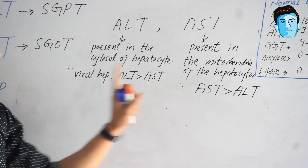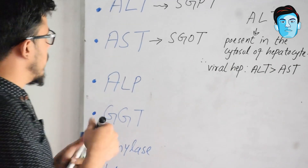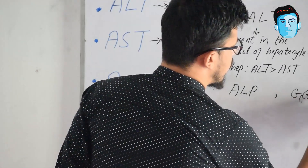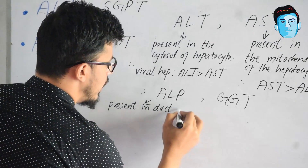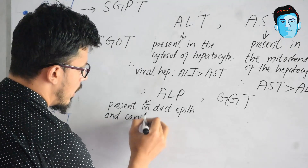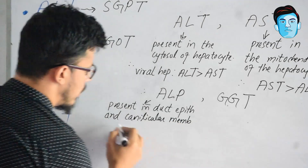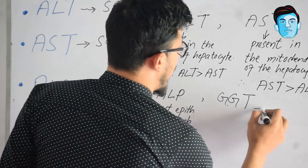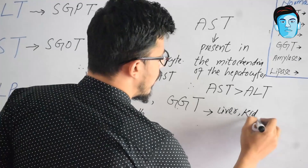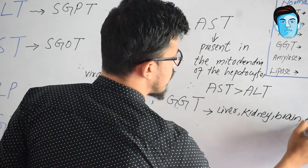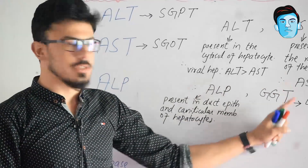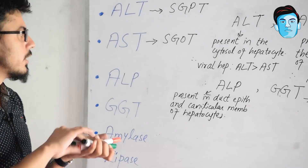Now let's talk about ALP and GGT. ALP — alkaline phosphatase — is present in the duct epithelium and canalicular membrane of hepatocytes. GGT — gamma glutamyl transpeptidase — is produced in various tissues like liver, kidney, and brain. Whenever there is a problem in the biliary system, the ALP and GGT values get raised from their normal values.